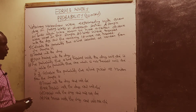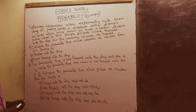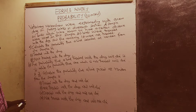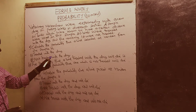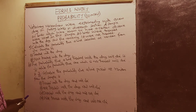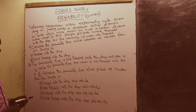Part A: Calculate the probability that a bird selected at random from the sample is — Roman numeral 1 — treated with the drug, and Roman numeral 2 — not treated with the drug.